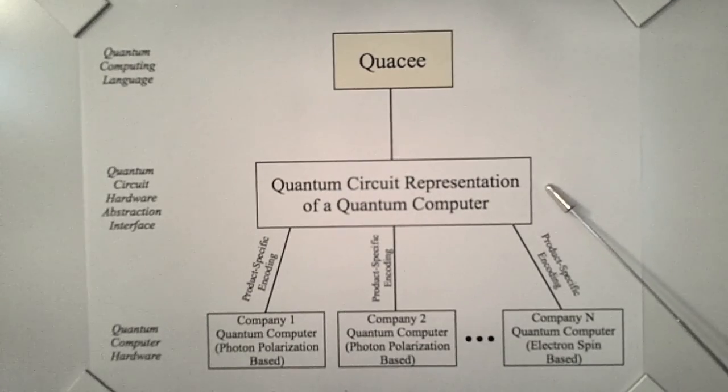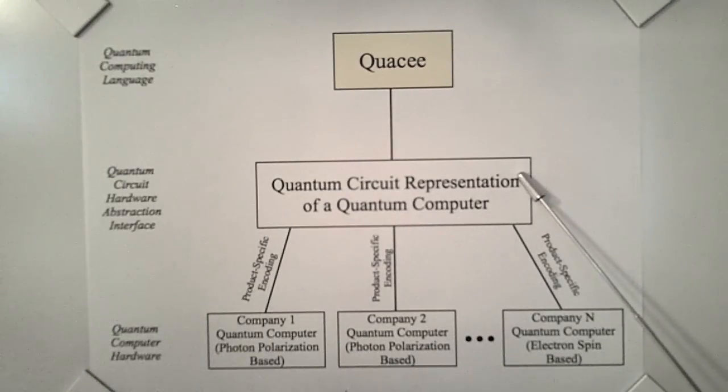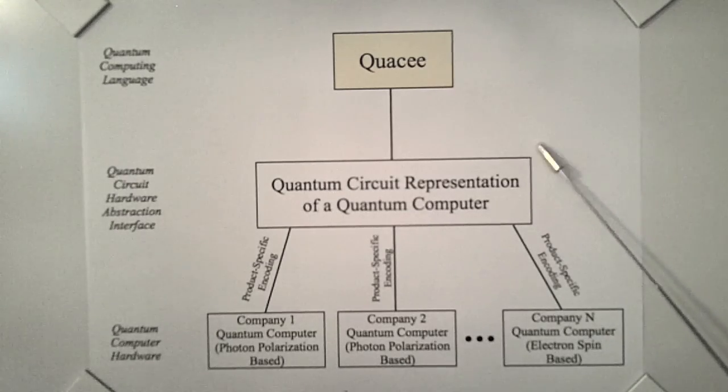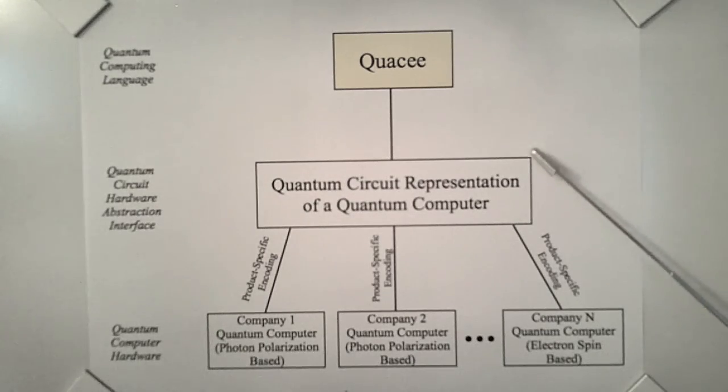While universal quantum computers are not generally available, researchers have developed an abstract model for how they would operate — this model is known as the quantum circuit model. The quantum circuit abstracts away the details of exactly how quantum operations will be implemented on different physical devices, and instead focuses on the essential operations and capabilities of quantum computing in terms of qubits and quantum gates. Quasi is designed to write to this abstract quantum circuit model interface, which is independent of differing physical implementations.